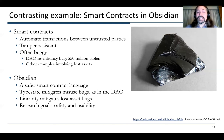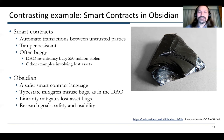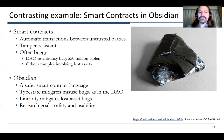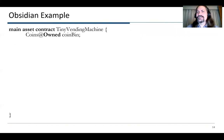We used typestate to mitigate misuse bugs such as in the DAO, and we used linearity to mitigate lost asset bugs. So the research goals were safety, coming from typestate and linearity, but also usability. We used Pliers here again to try to get that.